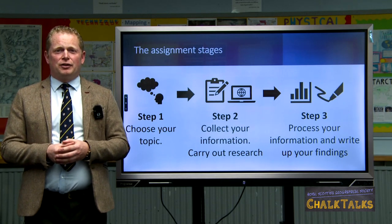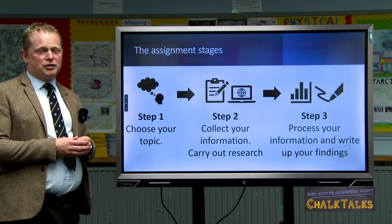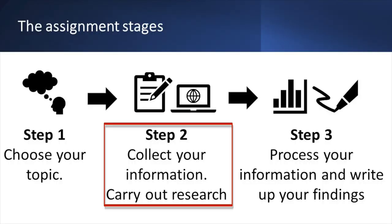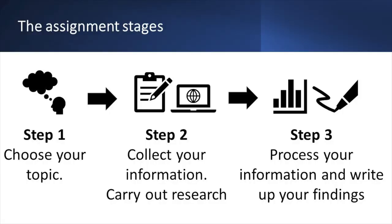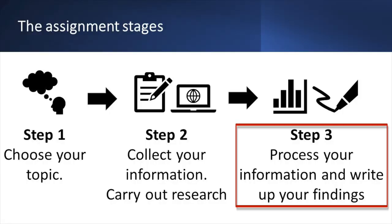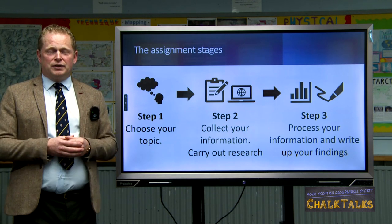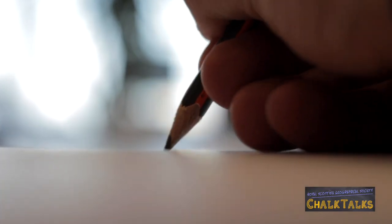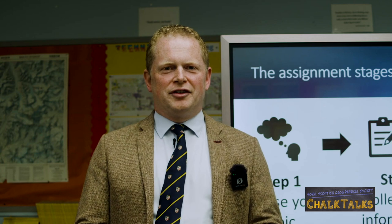To step back and look at the whole assignment process: stage one is to choose your own topic and check with your teacher that it's an appropriate geographic topic. Step two is to plan and collect information from primary sources, secondary sources, or a combination of both. Step three is to take your information, process it in a way that makes sense, use headings, and think about how to organise your space efficiently so that when you come to the assessment stage your findings are in a clear and logical order. We hope you found this helpful — be sure to check out the other Chalk Talks in our series.